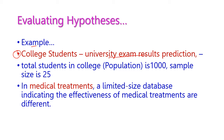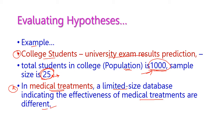For example, when predicting university exam results of college students: if the total population is 1000 students and we take one student per class giving a sample size of 25, the predicted result for those 25 students may not match the entire 1000-student population. Similarly in medical treatment, if the sample size is very limited, treatment effectiveness results will be very different — lack of information means we cannot provide effective treatment to the patient.